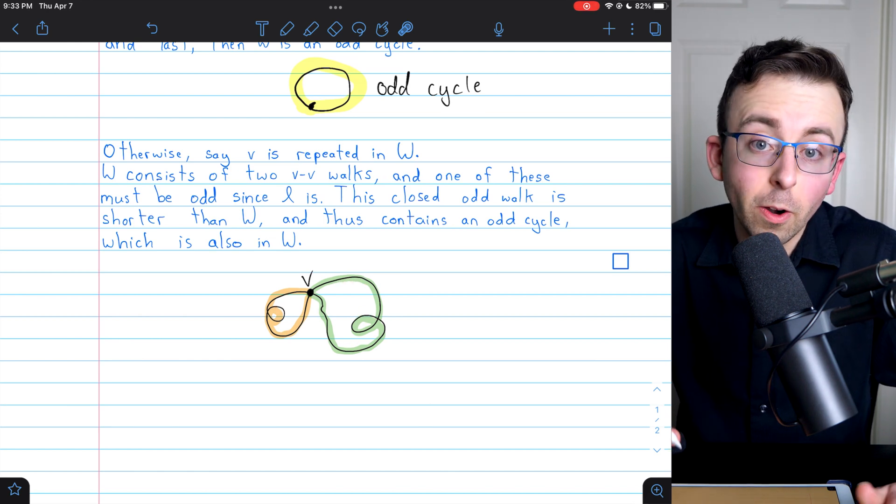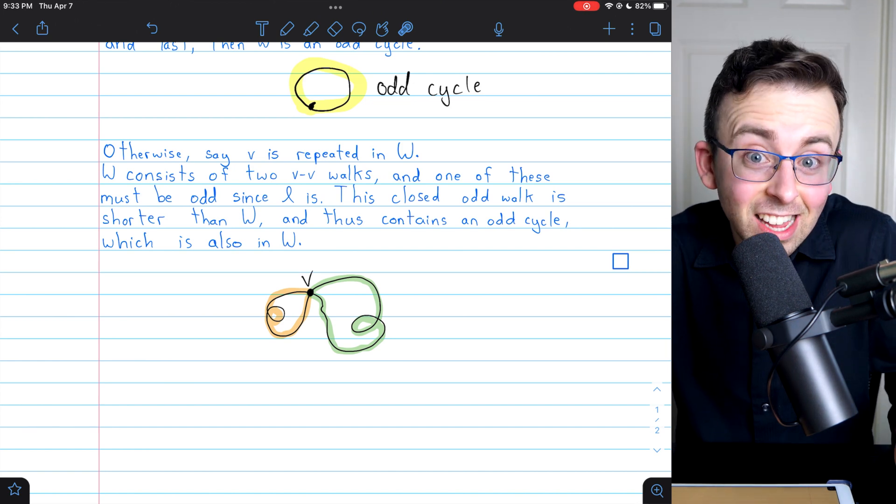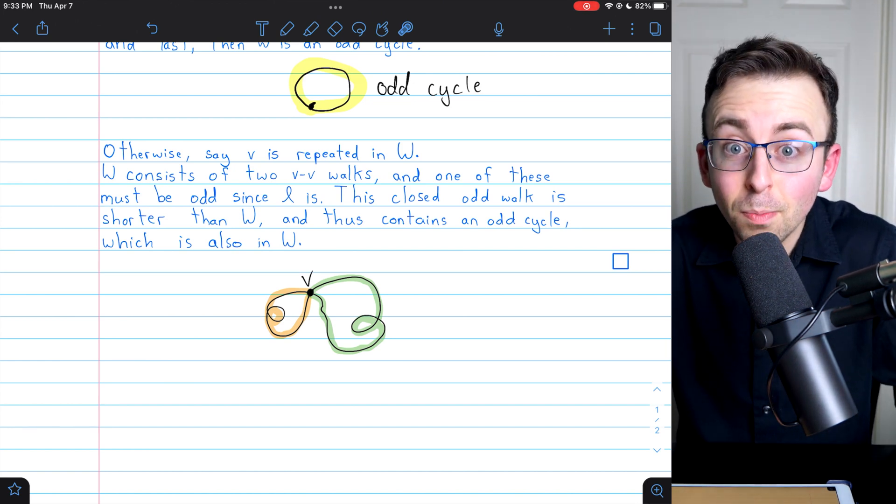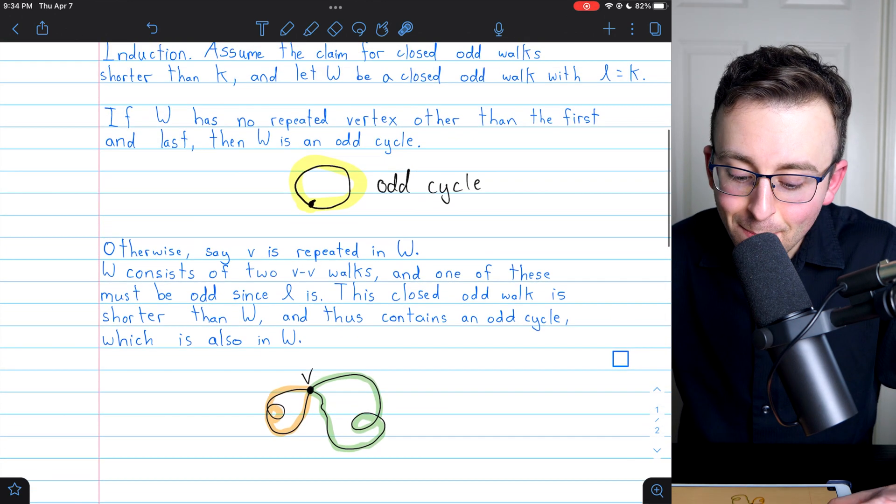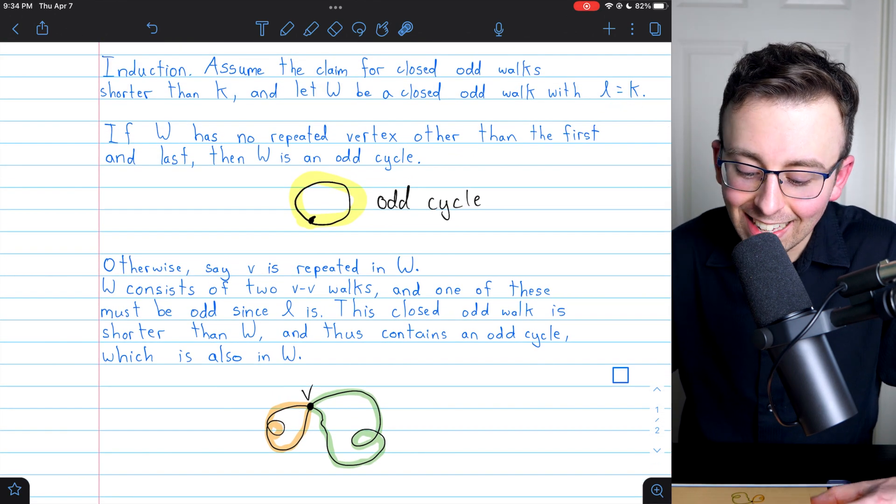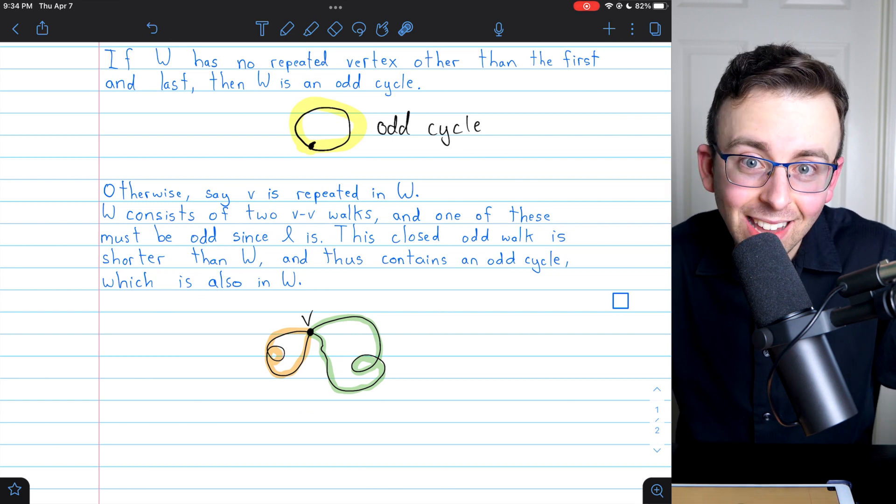And so this one that we're assuming is odd, because one of them has to be odd, it's got to be shorter than W, because it's just part of W. And since it's shorter than W, that means its length is less than K, and so our induction hypothesis applies.